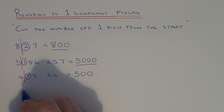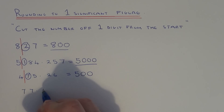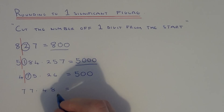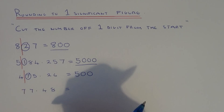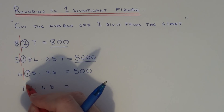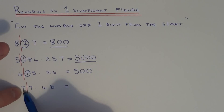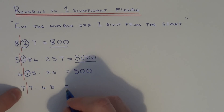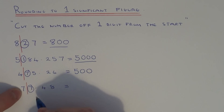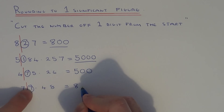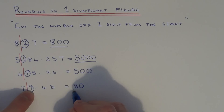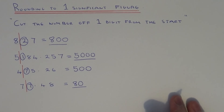Let's do another example — this time 77.48. Rounding off to one significant figure means we want one number from the start of the number, so we cut it off there. We're either going to round it down to 7 or round it up to 8. Since the number after the line is also 7, that's 5 or above, so it's closer to 8. Fill in 0's for the remaining digits up to the decimal point, and we get the answer 80.